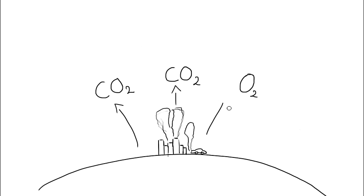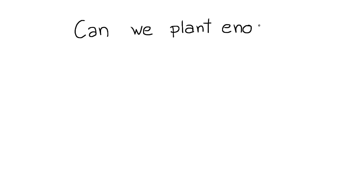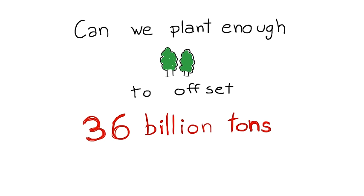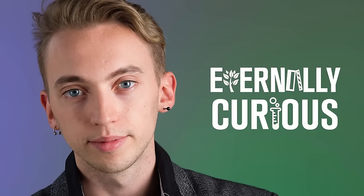So the equation is simple. We should reduce the stuff that we put into the atmosphere. And we could use this amazing 370 million year old technology, specifically engineered to capture CO2 called... trees. The question is, can we plant enough trees to offset 36 gigatons of CO2? My name is Fede and this is Eternally Curious.